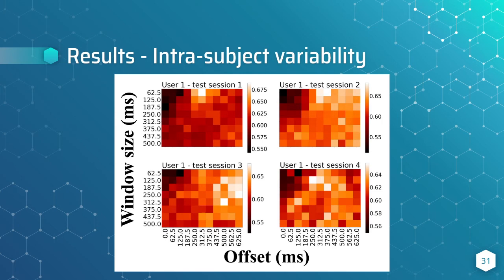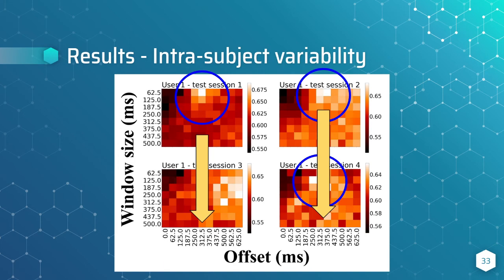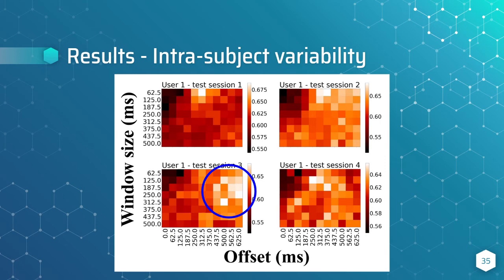Here, I am showing a color map of the balanced accuracy obtained with different offset and window size values. These results are obtained from user 1 and its 4 different test sessions in the cross-validation. Test sessions 1, 2, and 4 may have some similarities. The best setting seems to have an offset around 300ms with some variance, and a window size of 100. This is just amazing, because it is telling us that really there is a P300 ERP, and the network is just learning to recognize it.